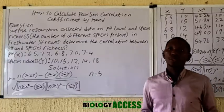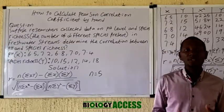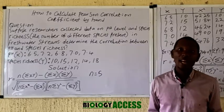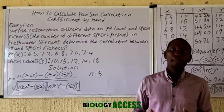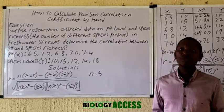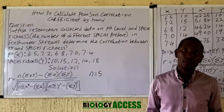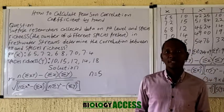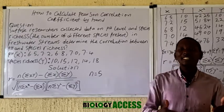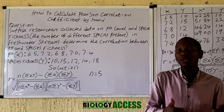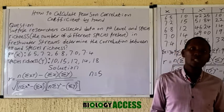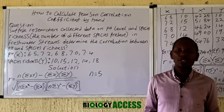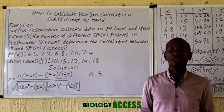What is correlation? Correlation is actually a measure that is used to describe the relationship between two variables in statistics. It actually determines the strength or degree as well as the direction of the relationship between these two variables.